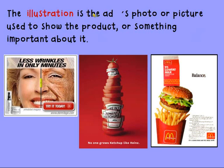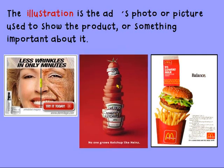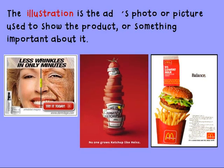And then we have the illustration. The illustration is the art's photo or picture used to show the product. For example, in this picture in the middle it's very easy to understand that the tomato ketchup, in this bottle with the shape of the bottle, is made of tomato — slices of tomato. This is a very good image. This is a great illustration.